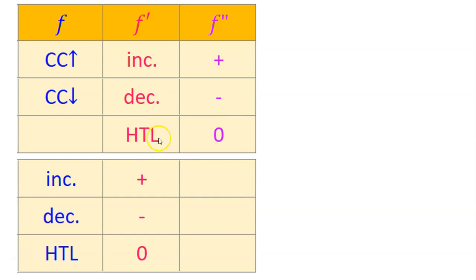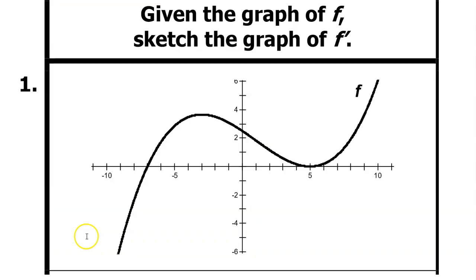HTL stands for horizontal tangent line. For example, if f prime is zero, then the original function f has a horizontal tangent line. By the way, HTL is not an accepted abbreviation for the College Board, so if you need to mention horizontal tangent line for a justification, you're going to have to write it out the long way. So here's problem number one. We are given the graph of the original function f, and we need to sketch a possible graph of f prime.